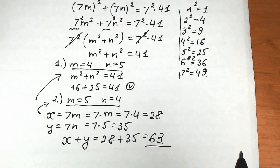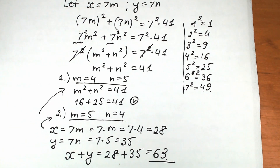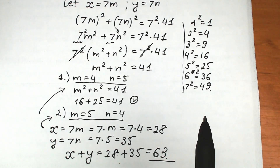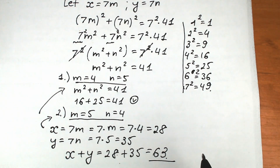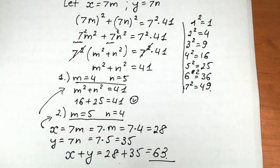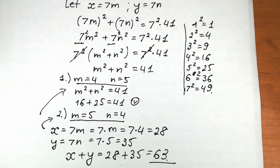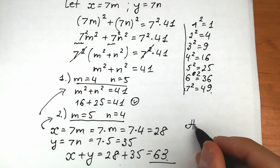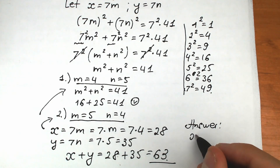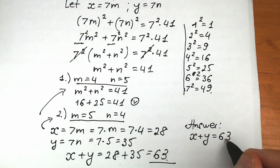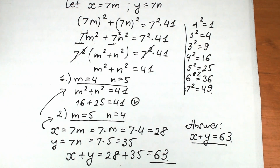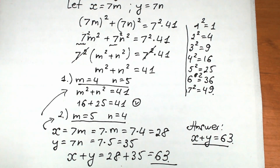This is our solution to the challenge. As homework, think about negative values — what about m = -4 and n = -5? This general solution gives us the maximum value of x + y = 63. I hope you learned something new. Thanks for watching, and see you in the next video!